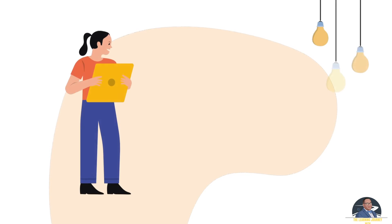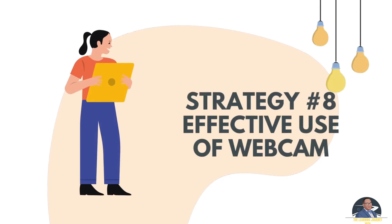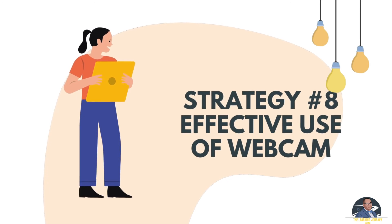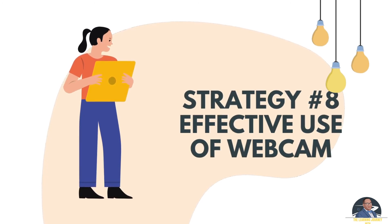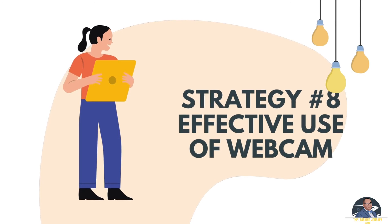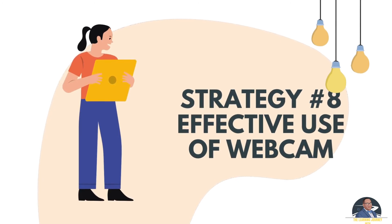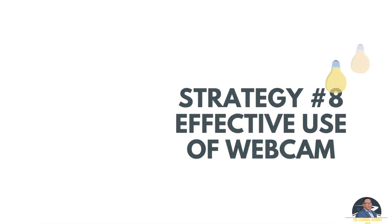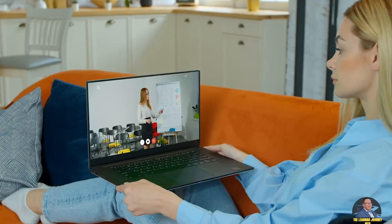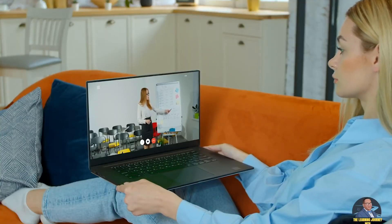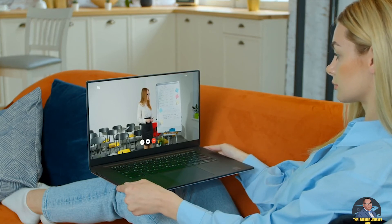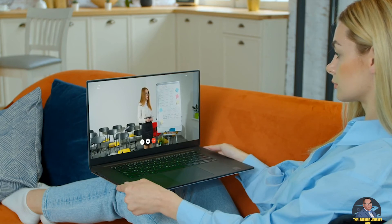One of the biggest barriers in online learning is the distance between the learner and the teacher, and of course between students for student-to-student interaction. We have to teach students how to use their webcam. For example, if a student is talking, they should be looking directly at the webcam and talking into it. If the teacher is communicating, the teacher should be looking into the camera and talking directly into it, so it makes that connection seem seamless — somewhat, at least.